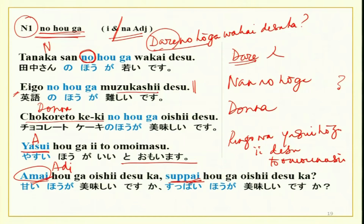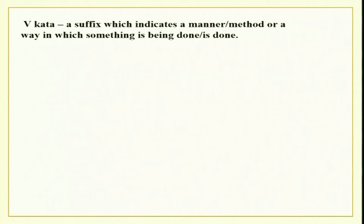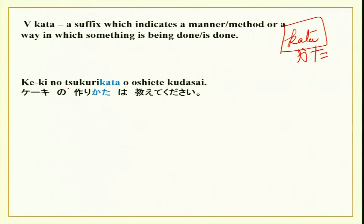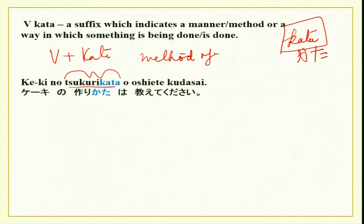There was also a word used with verbs: kata. Kata you have done earlier with hito — polite for hito is kata. But here kata is used in a very different way. Kata means manner or method in which something is done. The pattern: verb plus kata. Remove the masu form from the verb and put kata instead. So: arukimasu becomes aruki-kata, hanashimasu becomes hanashi-kata, tabemasu becomes tabe-kata, waraimasu becomes warai-kata.